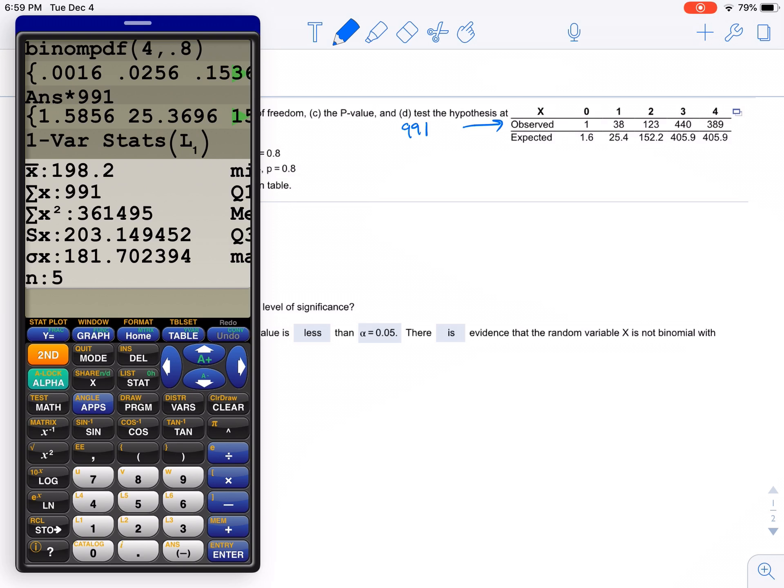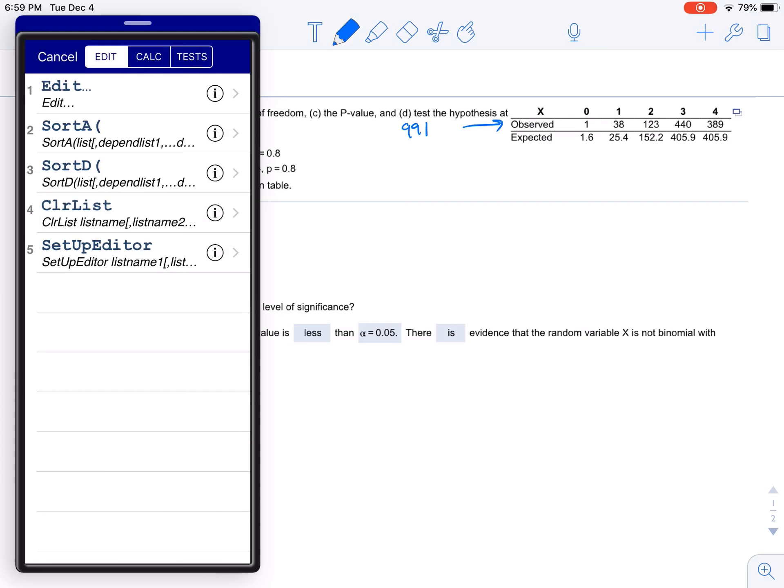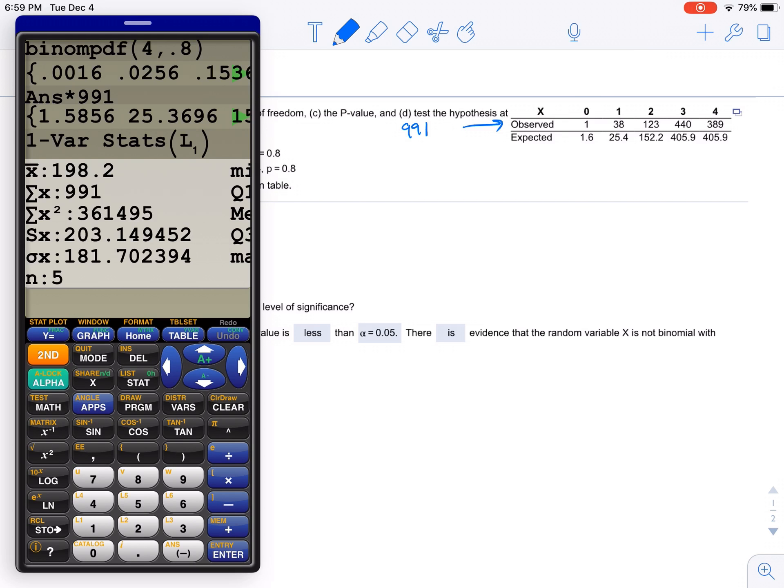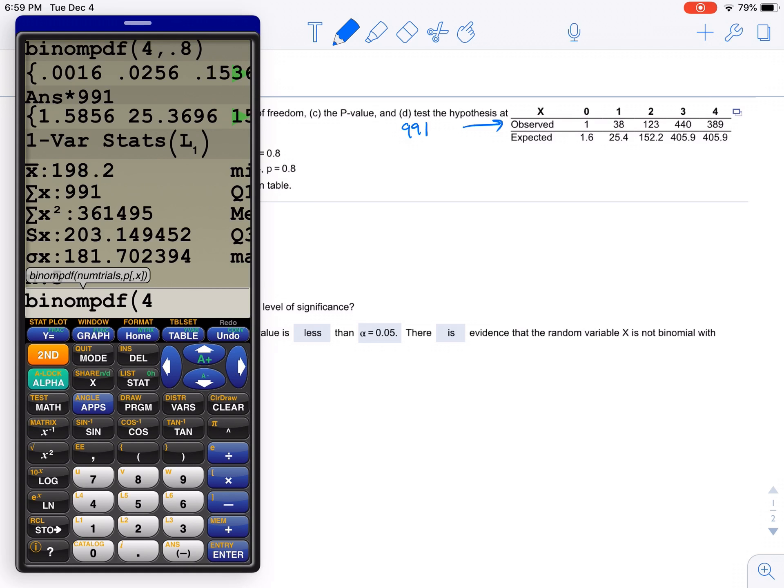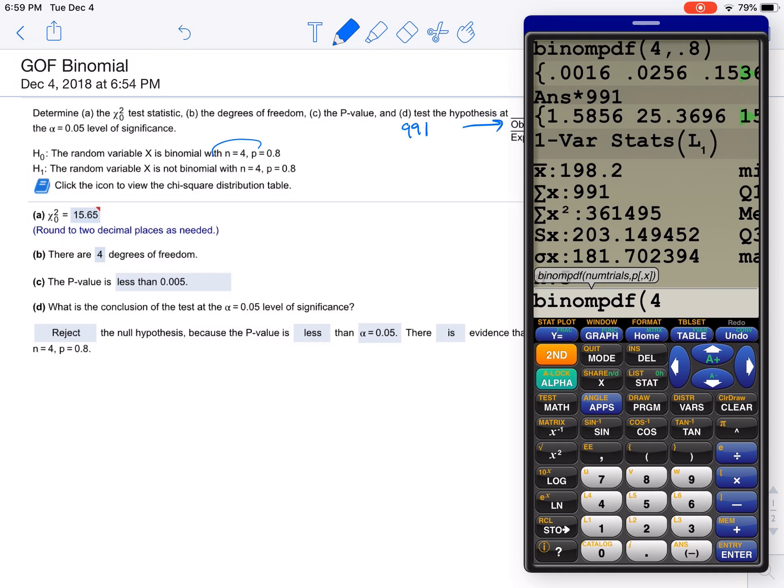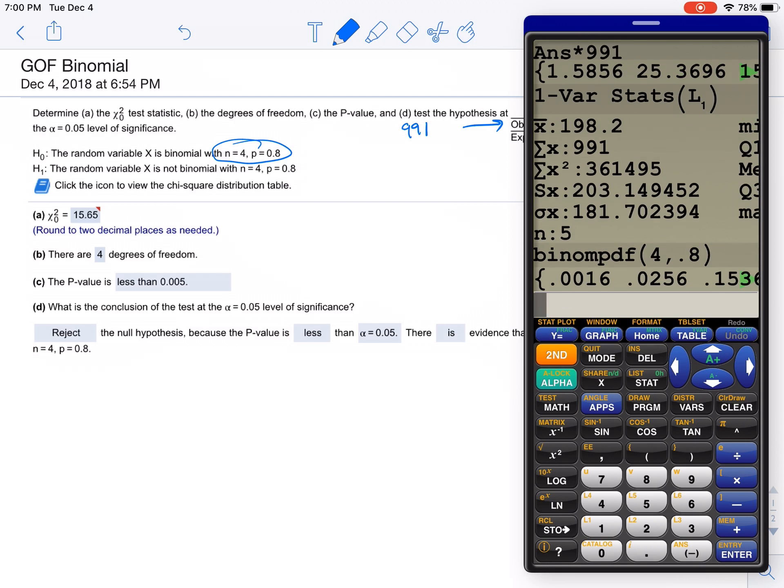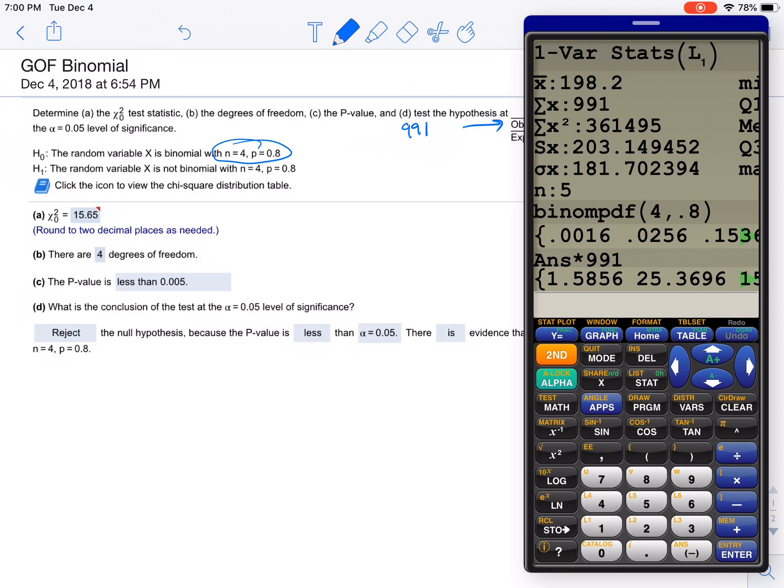Now, how did they get all those expected values? Well, you probably forgot this, but if you go to stat, we go to distribution, binomial PDF, and you put in 4. Why am I putting in 4? Notice that we have n equals 4, p equals 0.8. So if I put 4, 0.8, and I don't put anything for the actual value, it's going to calculate it for 0 through 4: 0, 1, 2, 3, and 4. So 0.0016, 0.0256.